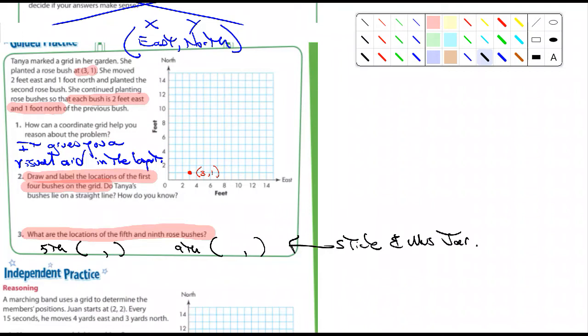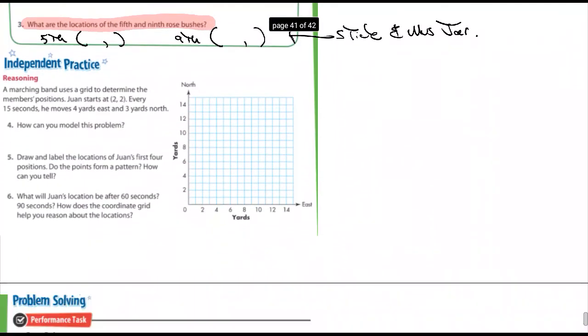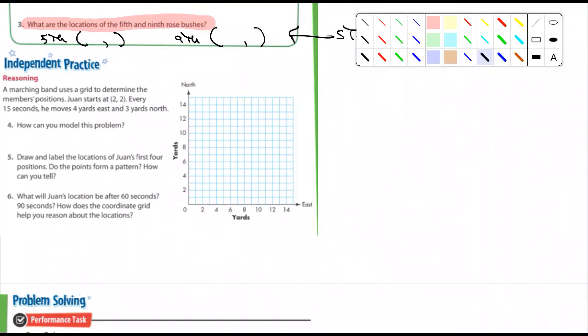Now, remember, you're doing the first four right here. Well, imagine where the 5th one would be, and that answer is going to go right there. And then, you're going to have to go from the 5th to the 6th to the 7th to the 8th, but then they want to know what the 9th is, so you'll have to do that. And we'll make that answer, you'll have to get both correct. Let's go down to the independent practice. It says, a merchant man uses a grid to determine the member's positions. And it says, 1 starts at 2-2. All right, so I'm going to mark 2-2. There's 2 and there's 2. And I'm going to write that down. 2, comma, 2.